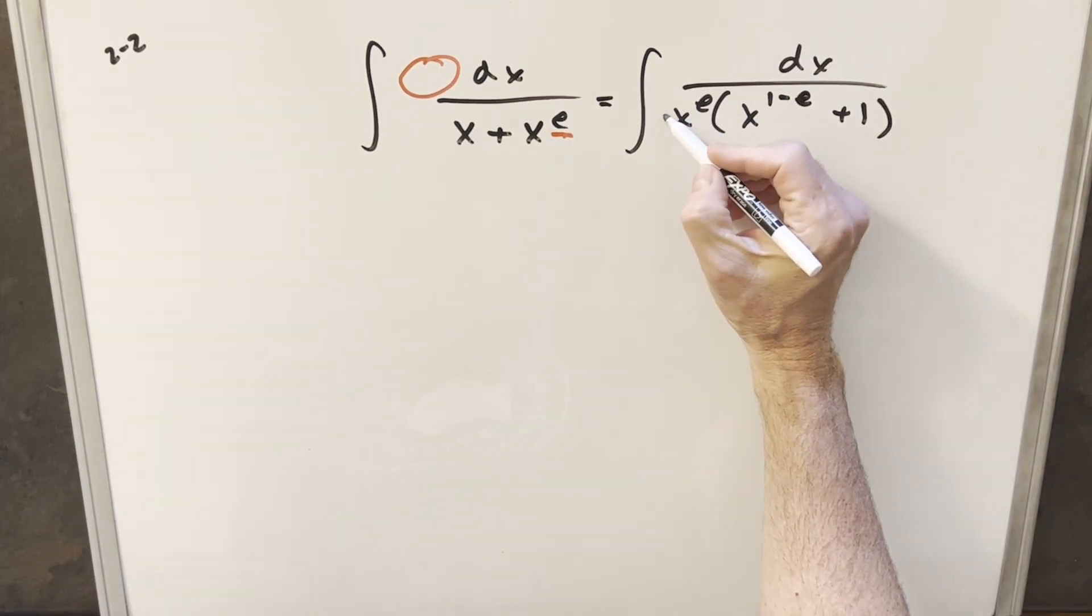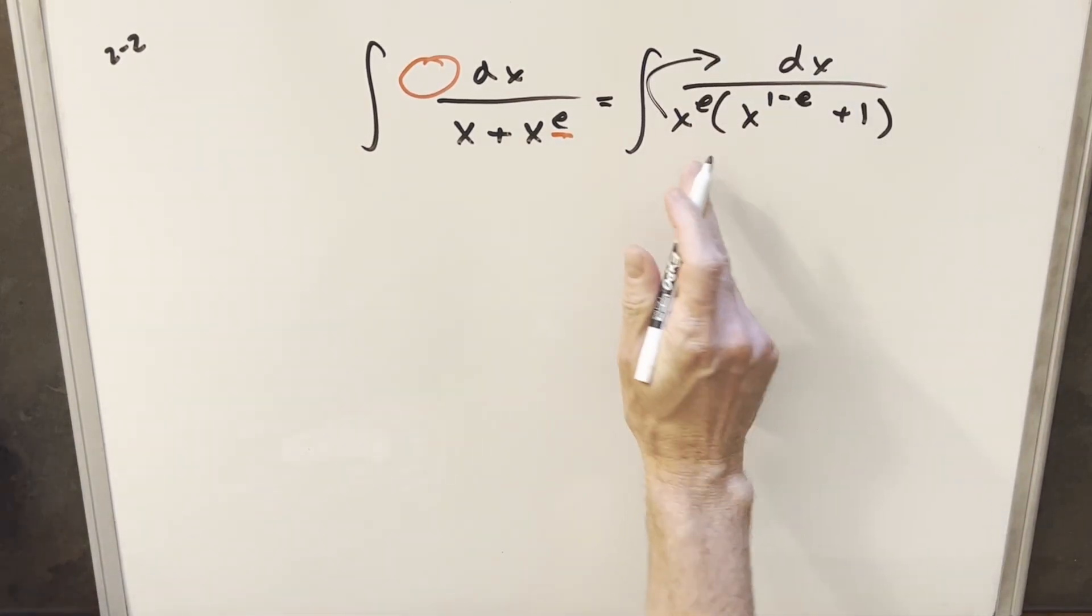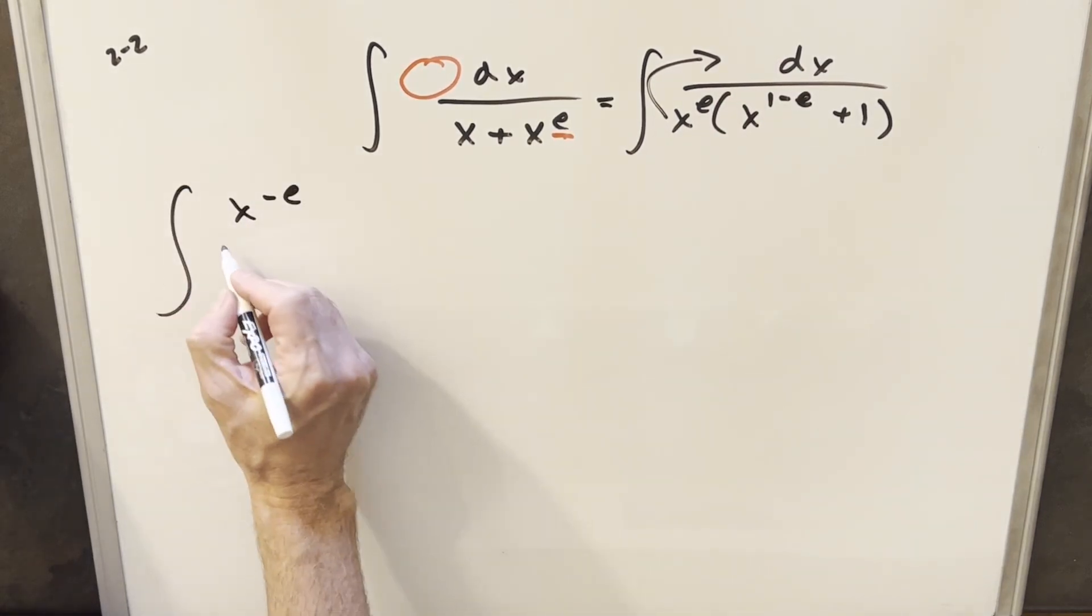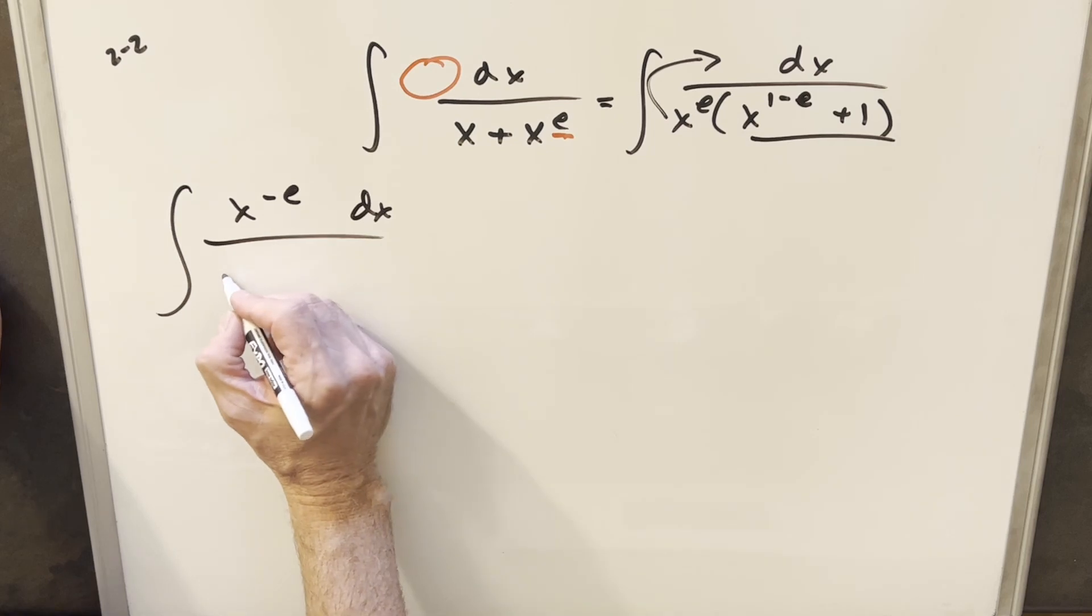And then in order to have something in the numerator for our u substitution, I'm just going to bring this x to the e into the numerator, but we'll write it as x to the minus e here. And then I'm just going to copy this business down.